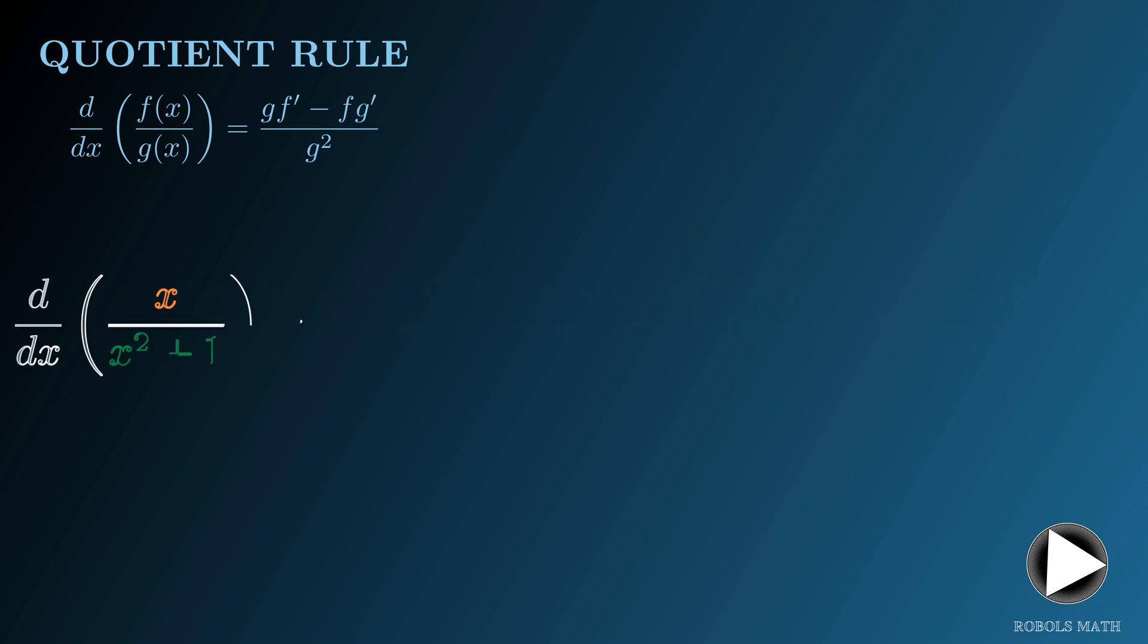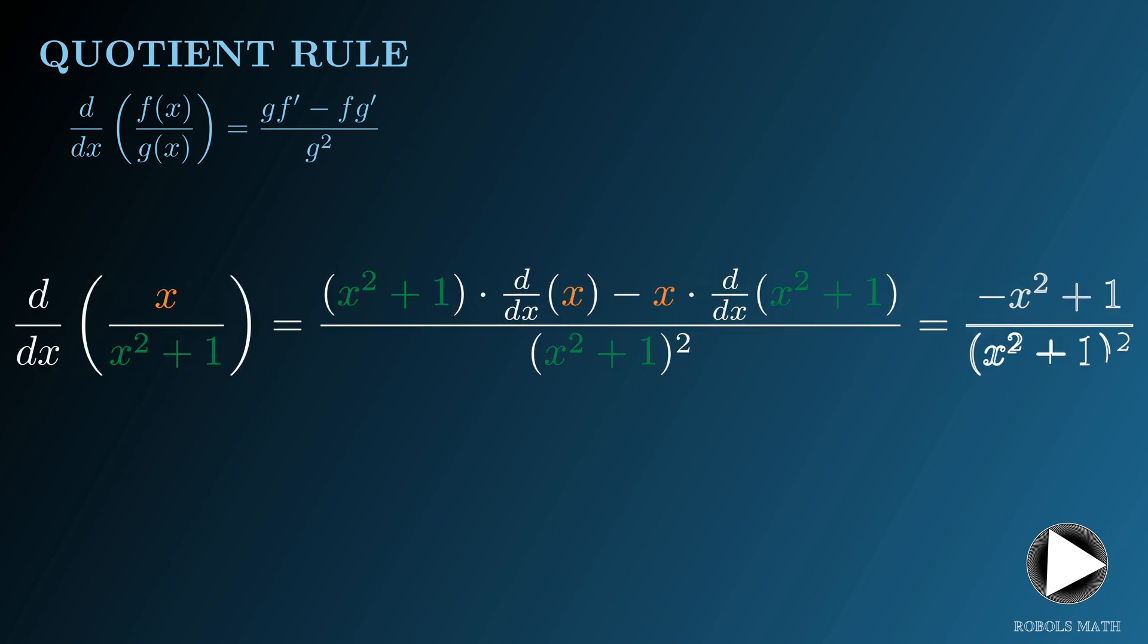Similarly, the derivative of x over x squared plus 1 is obtained using the quotient rule as shown. Lo and behold, the derivative we got here is the same as the integrand we are trying to evaluate. Therefore, the integral we want is actually equal to x over x squared plus 1 plus the integration constant c.